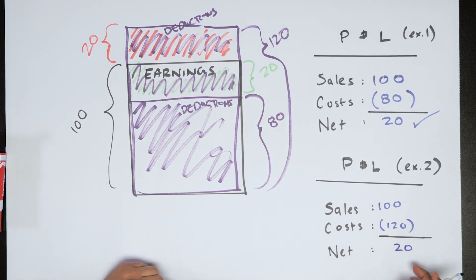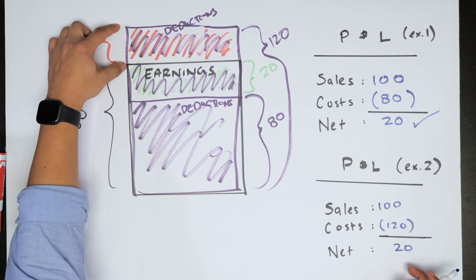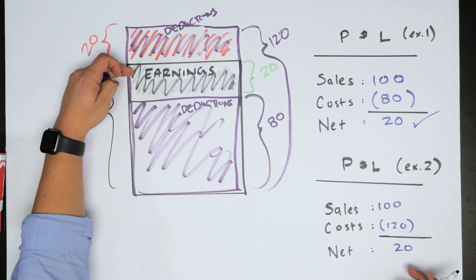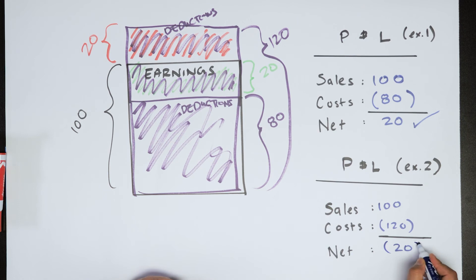So again, we're going to show our negative sign as negative 20. And that's how we show up on the P&L.